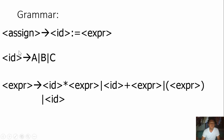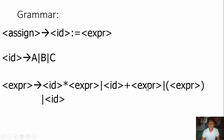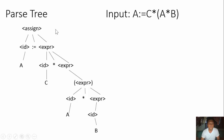First of all, you have to define assign. Assign is equal to ID, where ID equals A, B, or C. Then equals expression, where expression means ID times expression, ID plus expression, open and close expression, or just ID. Next is the parse tree.